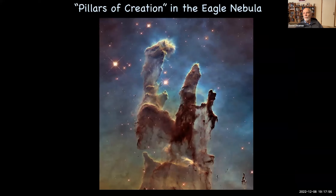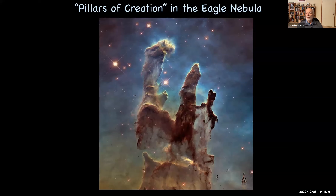Here's a beautiful image called the Pillars of Creation in the Eagle Nebula, first seen with the Hubble Telescope and now with the Webb as well. The little red dots are new stars forming within the molecular cloud — new stars and solar systems. Up above is a reddish area where starlight is illuminating the dust, and beyond it are stars that have already formed. That is where new stars came from and are coming from today.